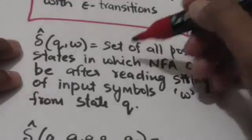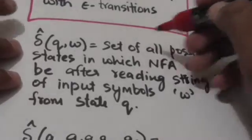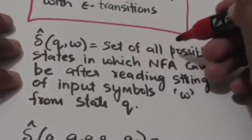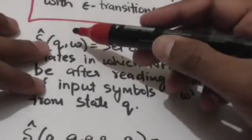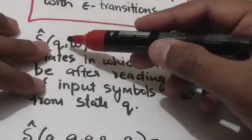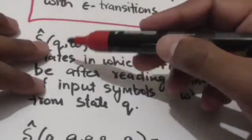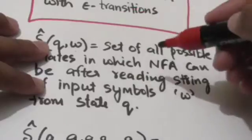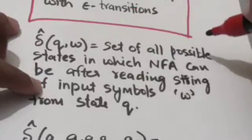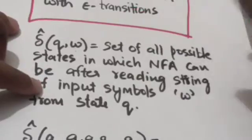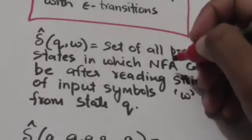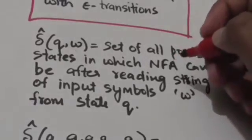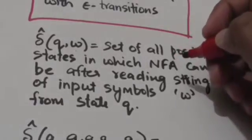Now, if the output of the extended transition function for the initial state of an NFA and a string of input symbols W is a set of states which contains at least one final state of the NFA, then the string is accepted by that NFA.